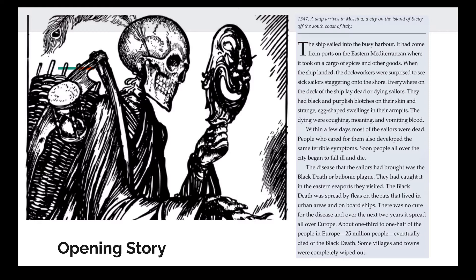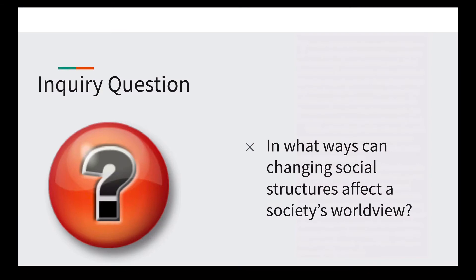The disease that the sailors had brought was the Black Death, or the bubonic plague. They had caught it in the eastern seaports they visited. The Black Death was spread by fleas on rats that lived in urban areas and onboard ships. There was no cure at the time, and over the next two years it spread all over Europe. About one-third to one-half of the people in Europe — approximately 25 million people — eventually died of the Black Death. Some villages and towns were completely wiped out.